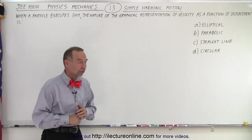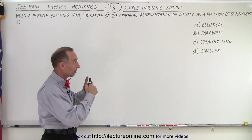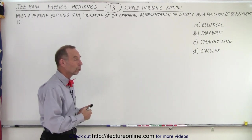and they give us four possible answers. So the graph either looks elliptical, parabolic, a straight line, or circular.